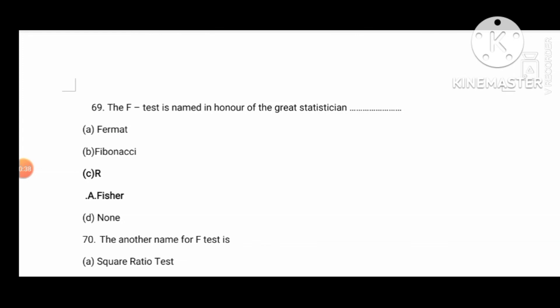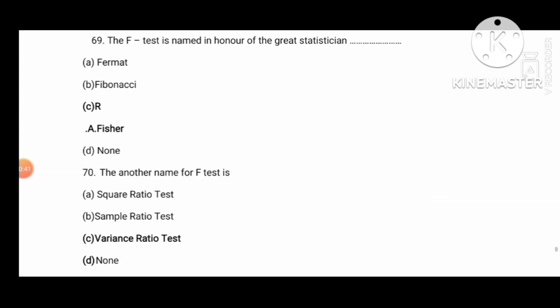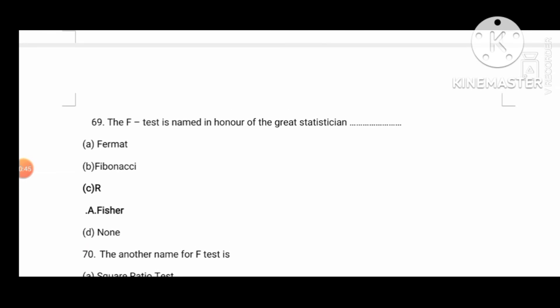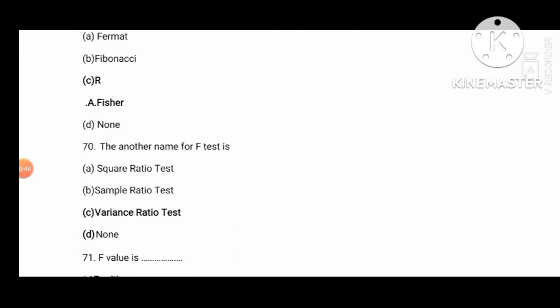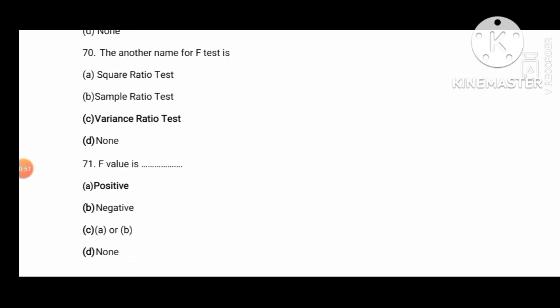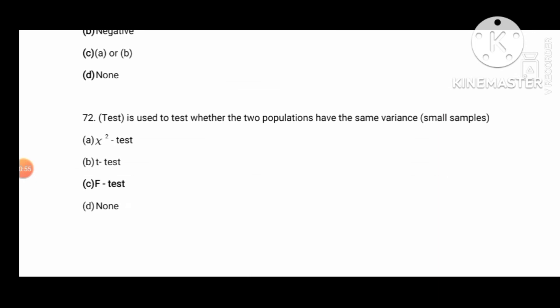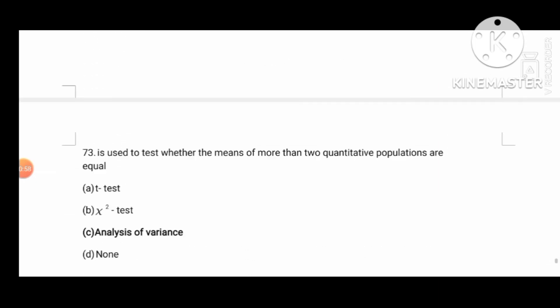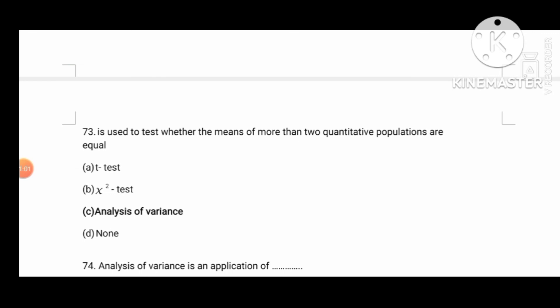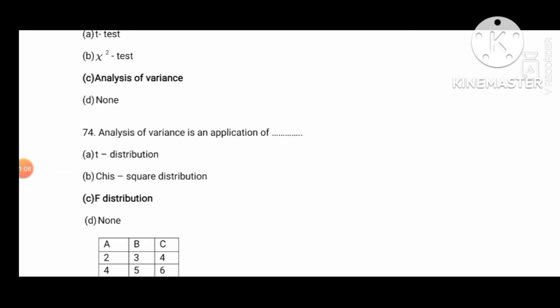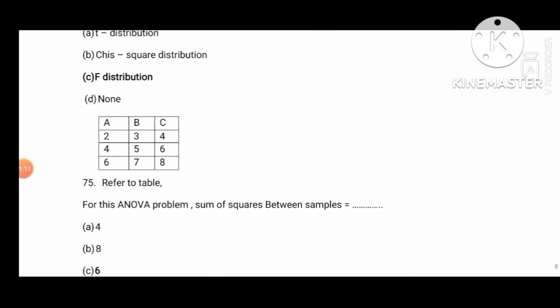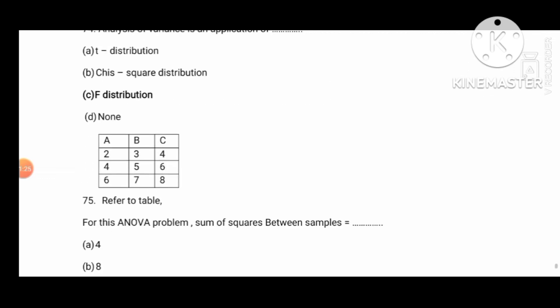The F-test is named after a famous statistician. Another name for F-distribution is the variance ratio test. The F-test is used to test whether two populations have the same variance. To test whether the means of more than two quantitative populations are equal, we use the analysis of variance, and its application uses the F-distribution. In the ANOVA table, the sum of squares between samples is 6.